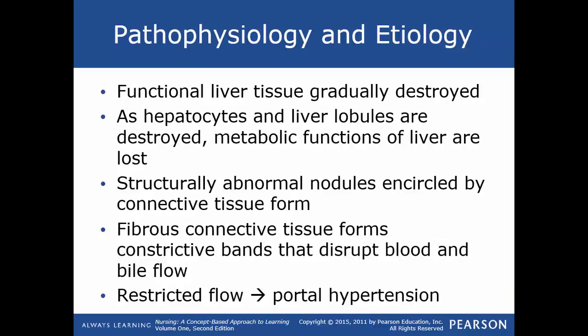Looking at pathophysiology and etiology: functional liver tissue is gradually destroyed and replaced by fibrous scar tissue. As hepatocytes and liver lobules are destroyed, the metabolic functions of the liver are lost. Structurally abnormal nodules encircled by connective tissue form. This fibrous connective tissue forms constrictive bands that disrupt blood and bile flow within the liver to the inferior vena cava.